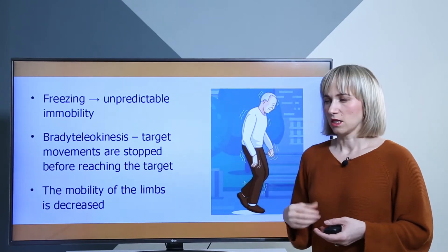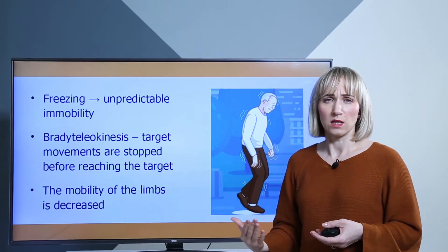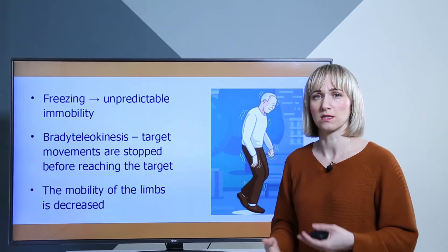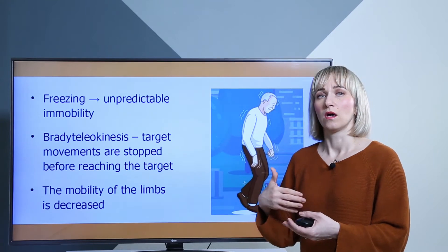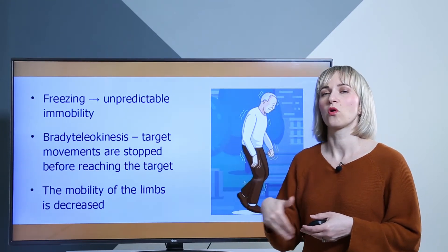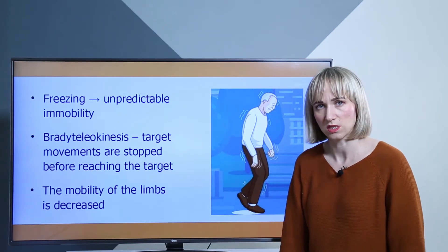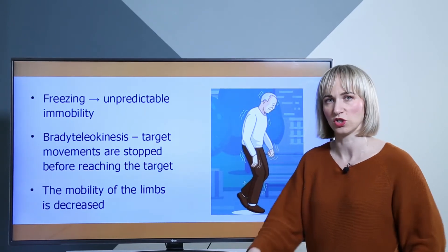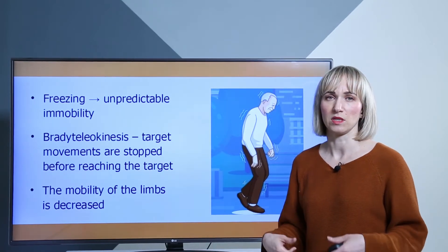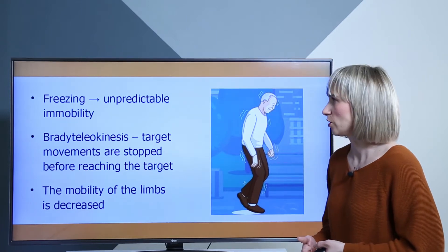Also, we can see that the mobility of the limbs is decreased. As we said, the patient has hypokinesia, so the speed is decreased and the amplitude of movement of the limbs is decreased. You can see that the patient doesn't have any synergy at the upper or lower extremities while walking or changing position.